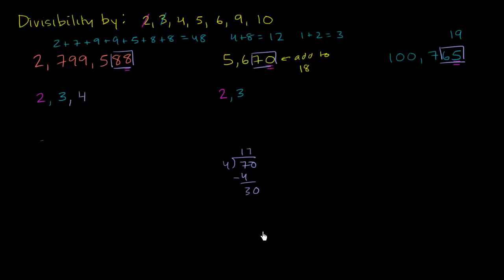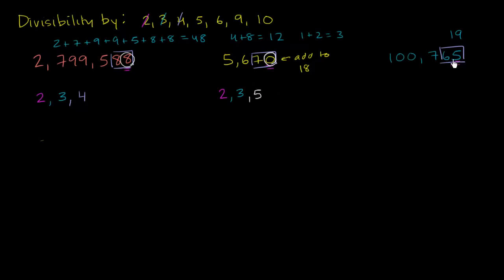Now let's move on to 5. You're probably already familiar with this: if your final digit is a 5 or a 0, you are divisible by 5. The first number does not end in 5 or 0, so it's not divisible by 5. The second number ends in 0, so it is divisible by 5. And the third number has a 5 as the ones digit, so it is also divisible by 5.